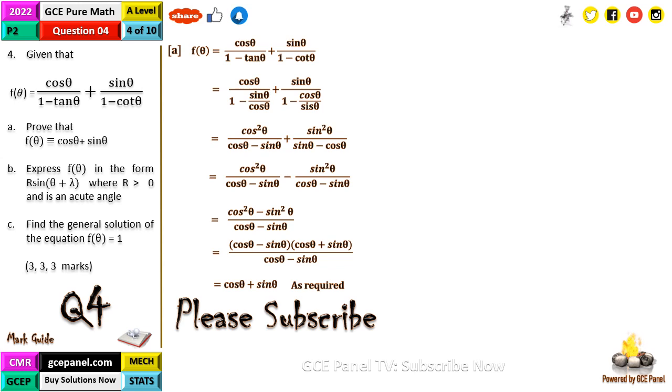So now this part B is saying that we express now this thing in the form r·sin(θ + λ). So with this one you have to expand this r·sin(θ + λ), that's the right-hand side. So this gives us r·sinθ·cosλ plus r·cosθ·sinλ. Now equating coefficients here, the ones in red, you see that r·cosλ is equal to 1, and r·sinλ is also equal to 1.